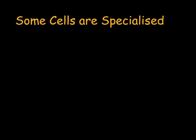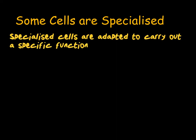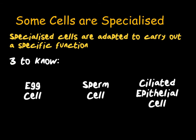So far, we've only looked at generalised or typical cells. However, most cells are actually specialised — they're designed to carry out a specific function. Specialised cells are very common inside multicellular organisms, where we have lots of different cells to do different jobs. For example, you would have brain cells, nerve cells, and red blood cells. For your GCSE, you need to know about three specific types of specialised cells: egg cells, sperm cells, and ciliated epithelial cells.